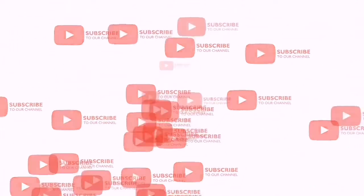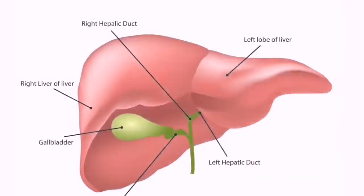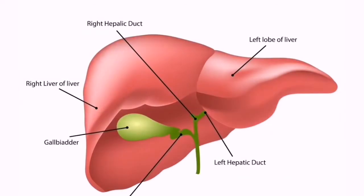In this video we will talk about the liver — what is the role of the liver in the human body and how it functions. The liver is a large meaty organ that sits on the right side of the belly.